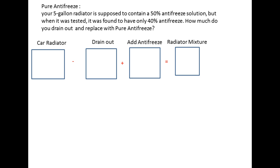This is a word problem and we're going to use boxes because it's easier. We label these boxes: car radiator, minus the drain out, plus add antifreeze, equals radiator mixture. These boxes represent our word problem — it's good to draw boxes because it puts in pictures what we intend to do. Our car radiator contains a 40% mixture.